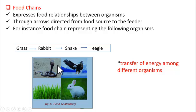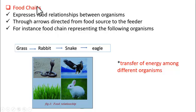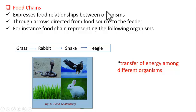The representation of food relationships between the organisms in the form of a chain is what is called a food chain. So what is a food chain? It is the representation of food relationships between the organisms in the form of a chain.